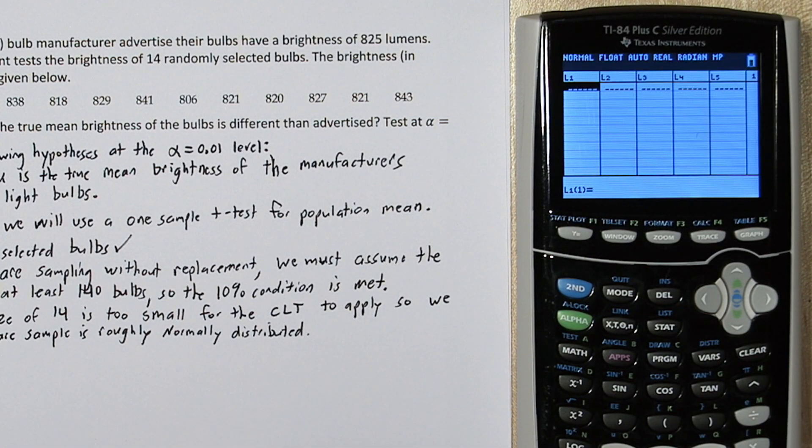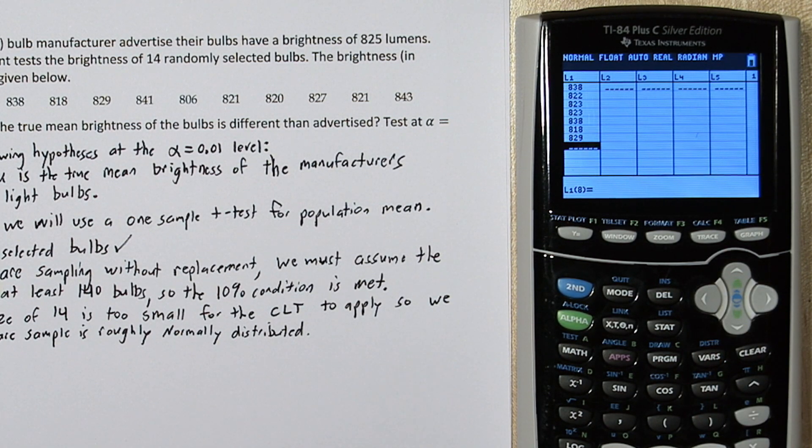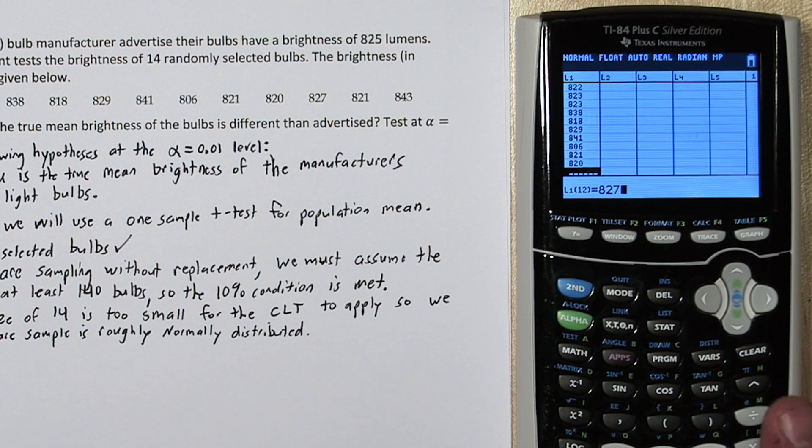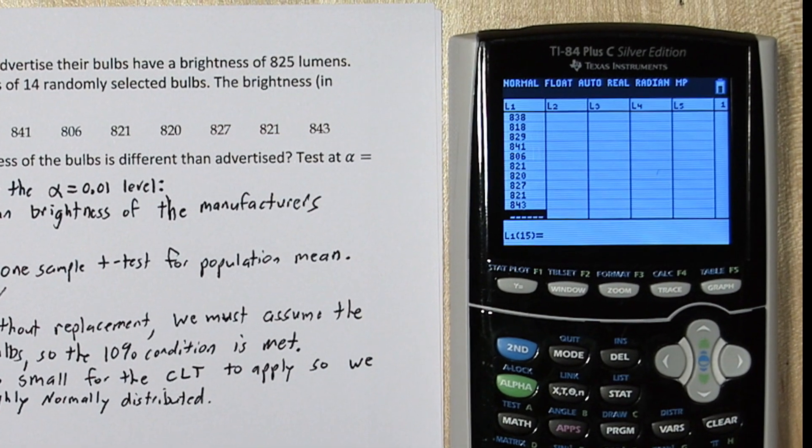To do this, press the STAT button on the calculator. Now press ENTER. These are our lists, and we're going to type all of our sample data, these 14 light bulb brightnesses, into list 1.